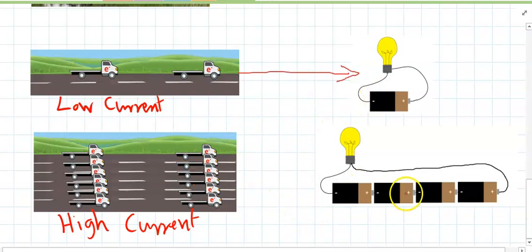But if you connect lots of batteries together, that will increase the current. So in this one, with four batteries all connected together, the circuit will have a high current, so the electrons will flow faster and there'll be more electrons flowing through the circuit. So more trucks driving faster down the road.